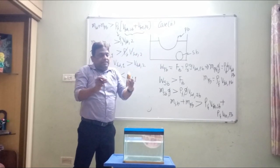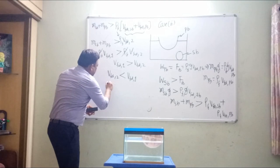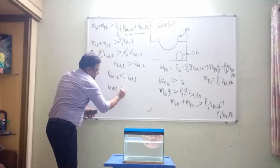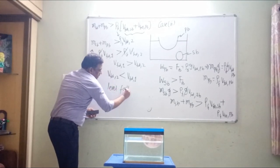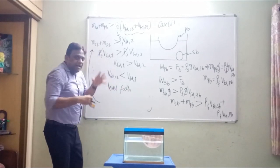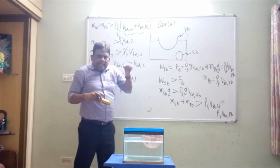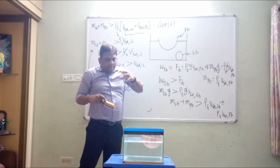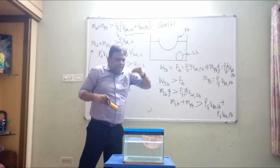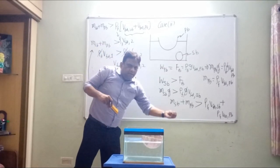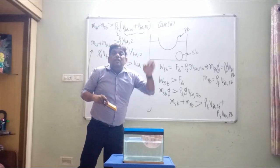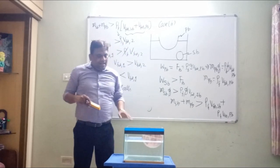If the volume displaced is more, the level rises; if the volume displaced is less, the level falls. Since volume displaced in case 2 is less than in case 1, when the steel ball is thrown into the water from the plastic bowl, the level falls.